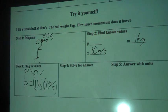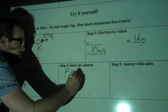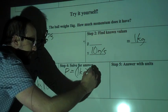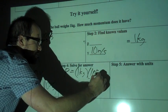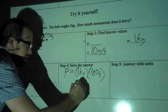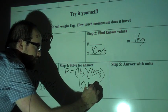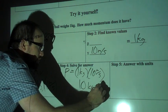So solve for answer. P equals 1 kilogram times 10 meters per second. Easy, 1 times 10, 10 kilogram meters per second.